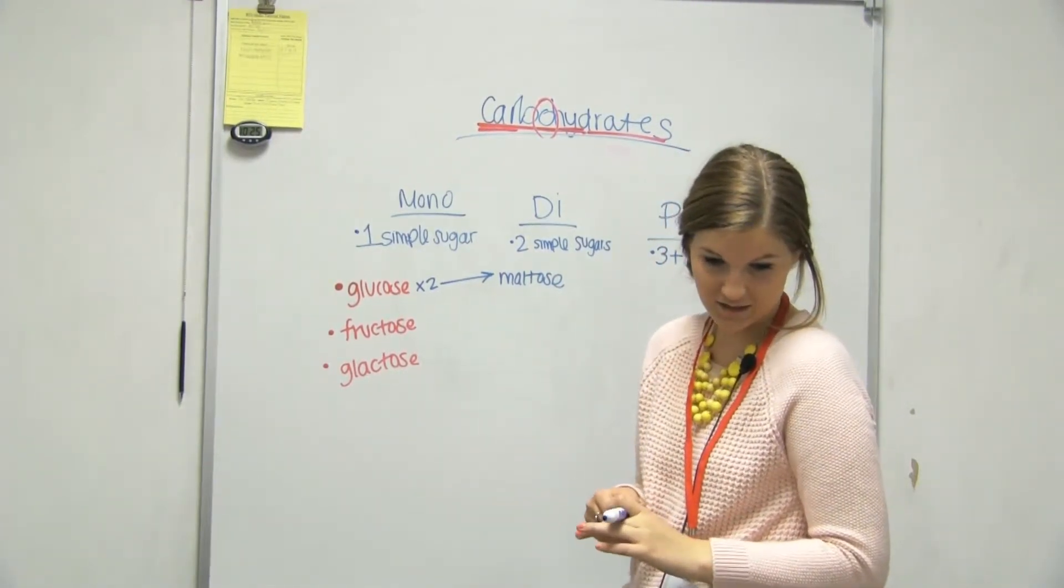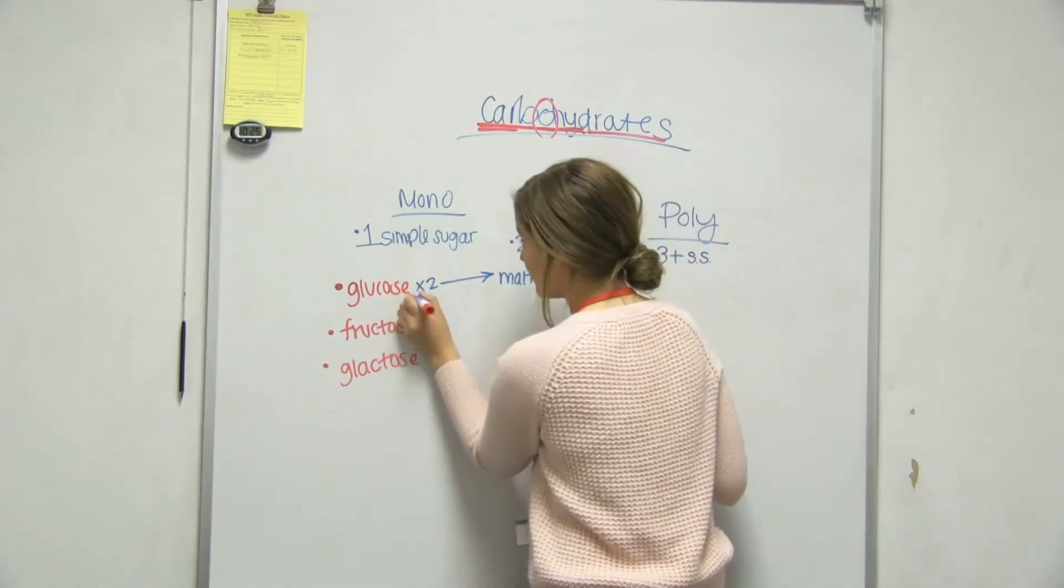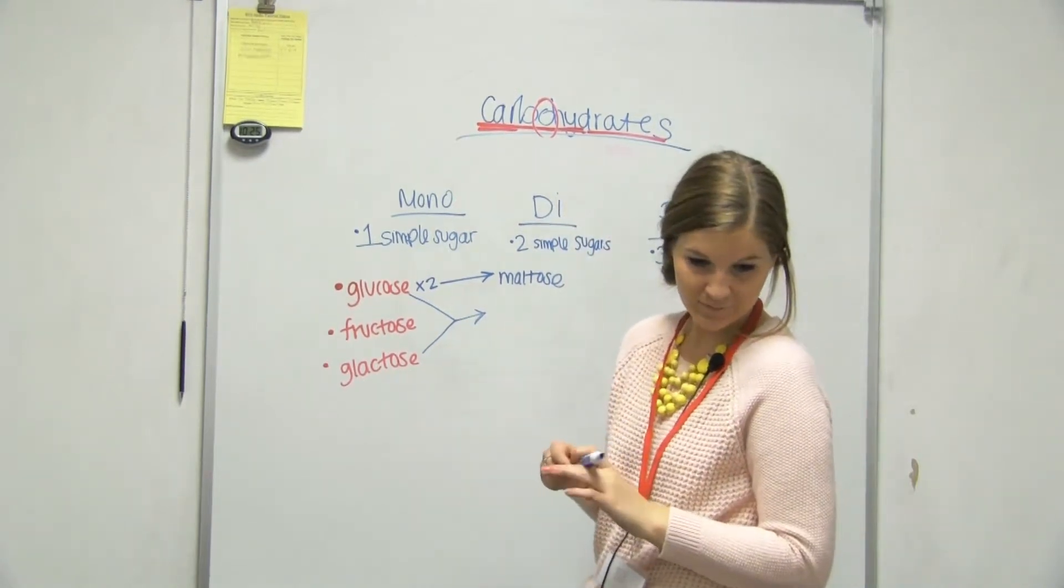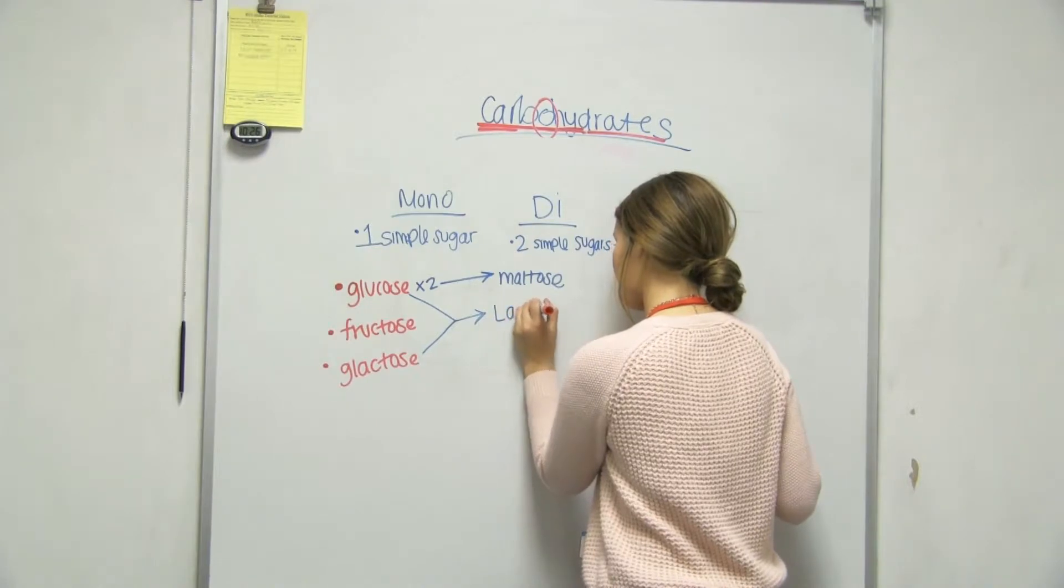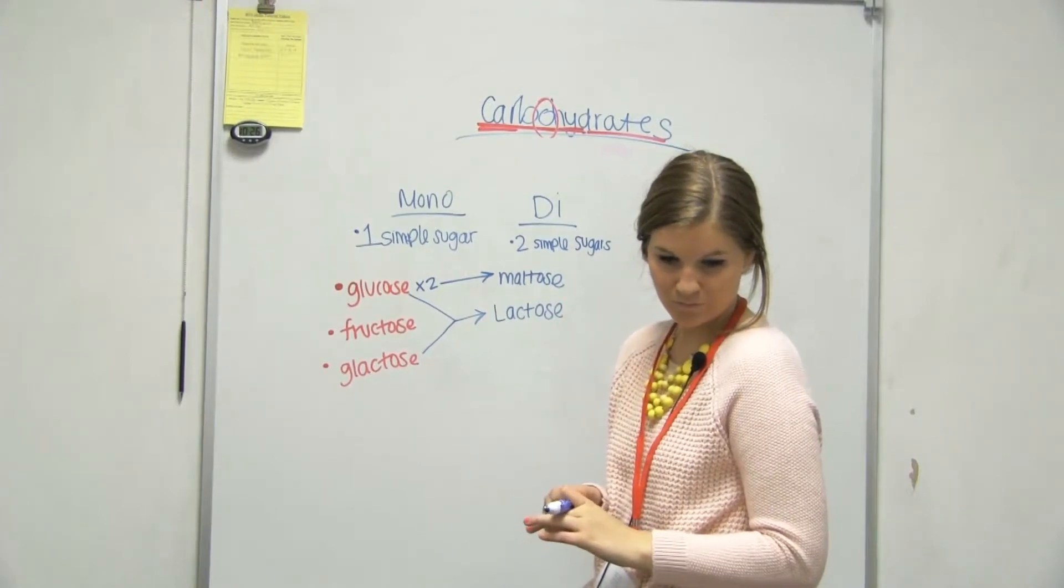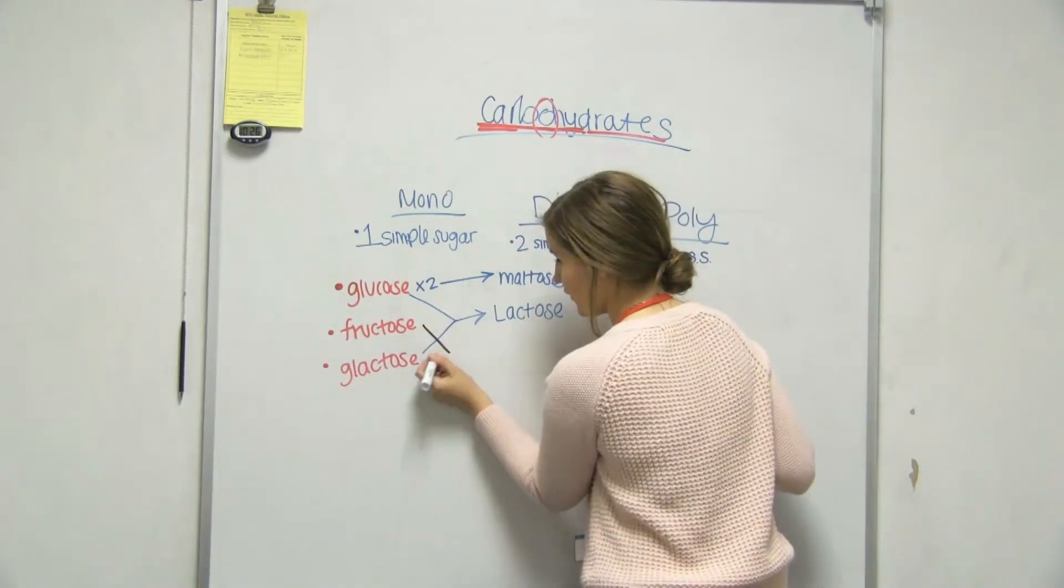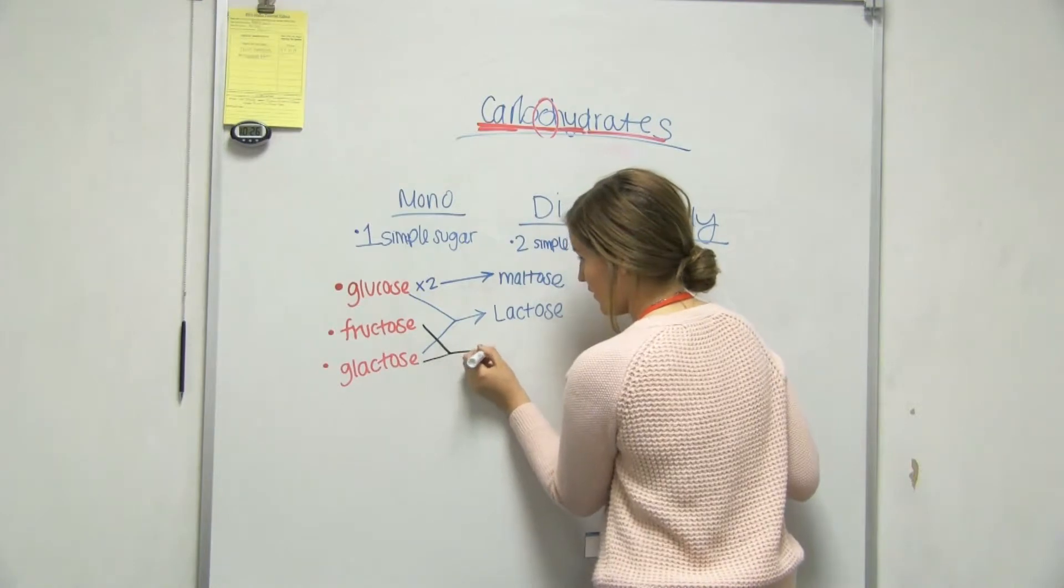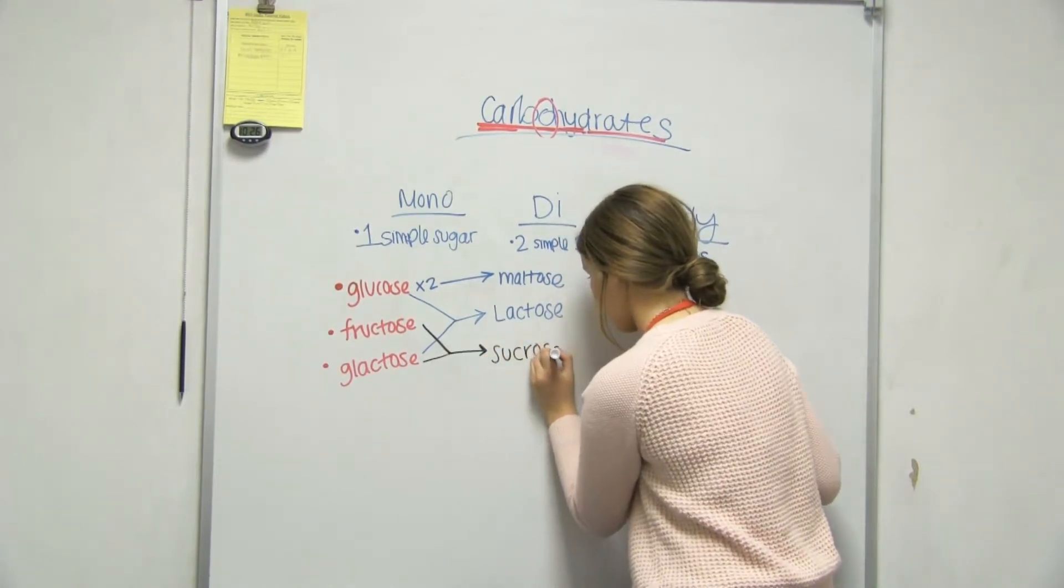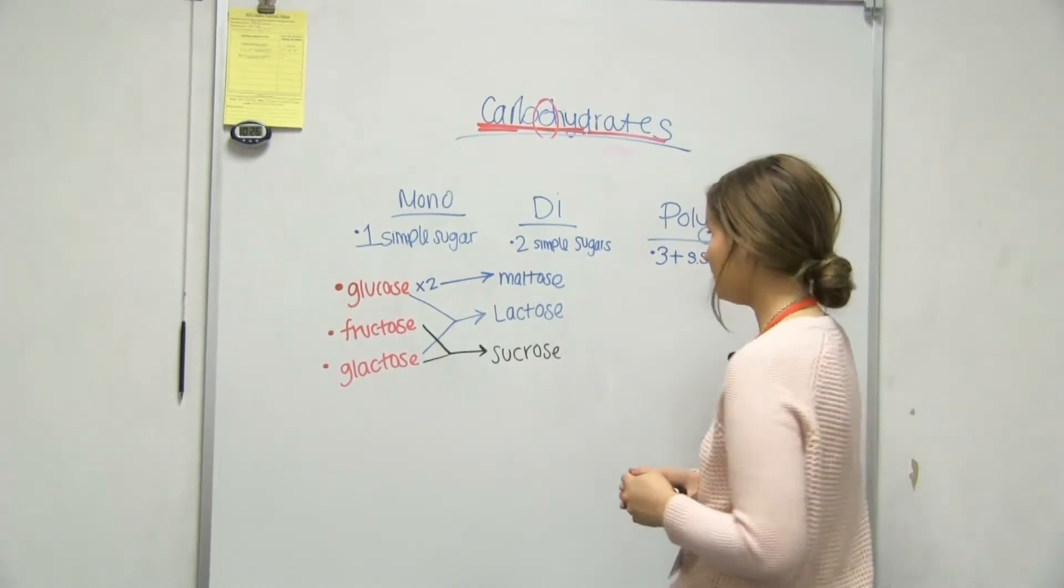And then if we take one glucose and one galactose, we will make lactose. And then if we take, it's in a different color, if we take fructose and galactose, we're going to make, what was it called? Sucrose.